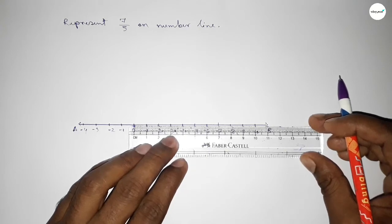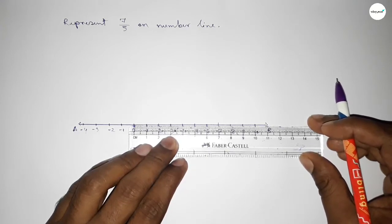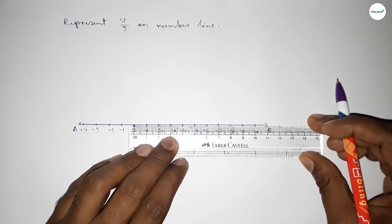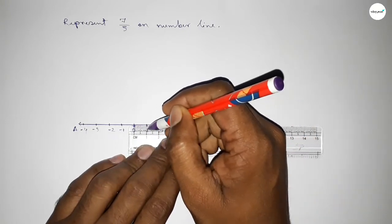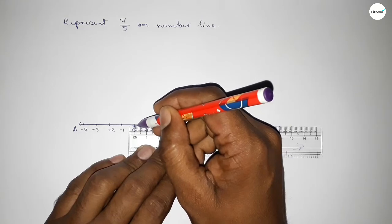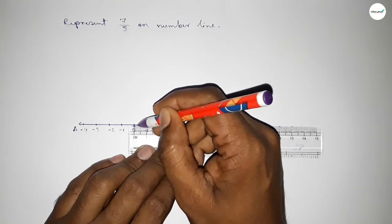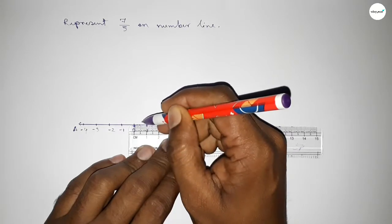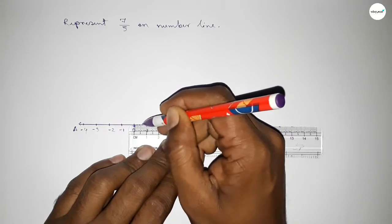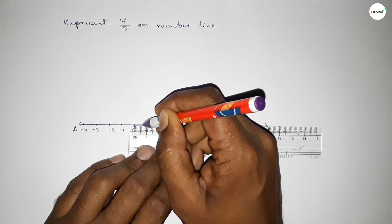So first dividing the distance between 0 to 1 into 5 parts. First equals 0.2, the second is 0.4, the third is 0.6, and the fourth is 0.8 unit.